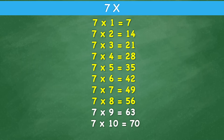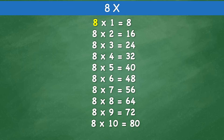7 times 8 equals 56. 7 times 9 equals 63. 7 times 10 equals 70. 8 times 1 equals 8. 8 times 2 equals 16. 8 times 3 equals 24. 8 times 4 equals 32. 8 times 5 equals 40. 8 times 6 equals 48. 8 times 7 equals 56.